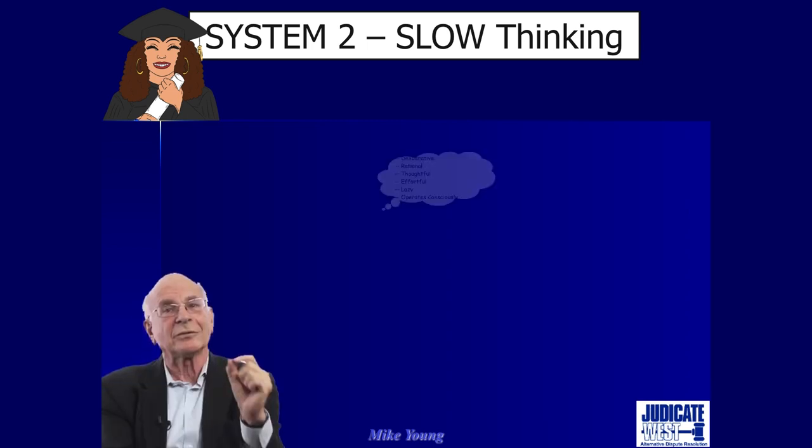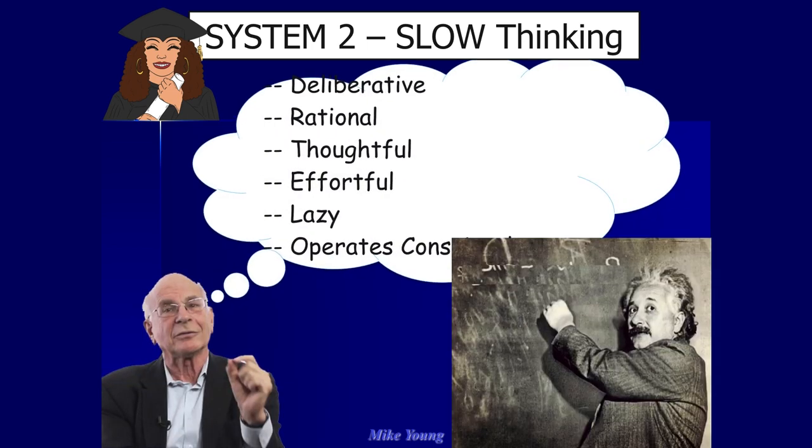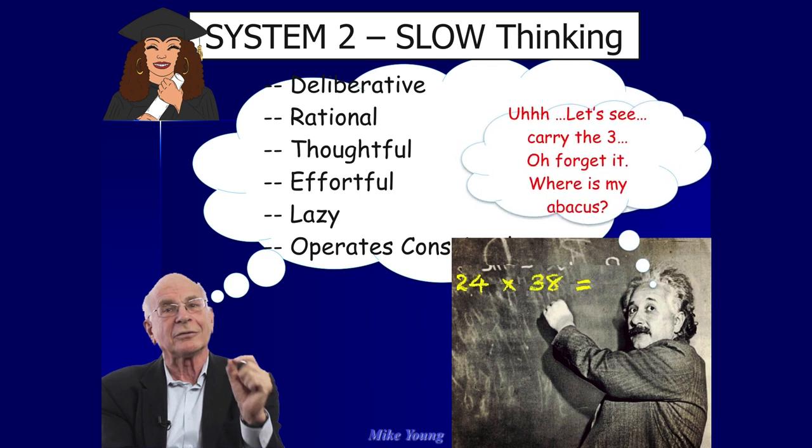System 2, by contrast, is slow. It is very deliberate, rational, thoughtful, and effortful. And in that sense it becomes lazy — it takes a lot of intellectual resources to get your System 2 brain working, so if it can get by without working and let System 1 make the decisions, it'll do that. Think about 24 times 38 instead of two times two. You could probably figure that out in your head, but it's going to take some effort — you've got to sit there, 24, 38, eight times four, carry a three. Eventually you'll get there. That's your System 2 working pretty hard.